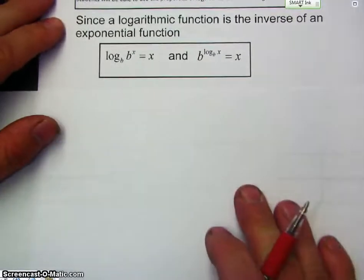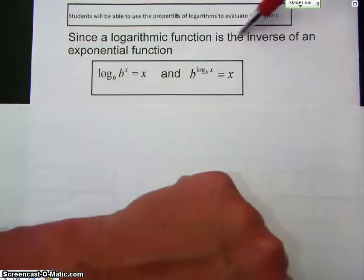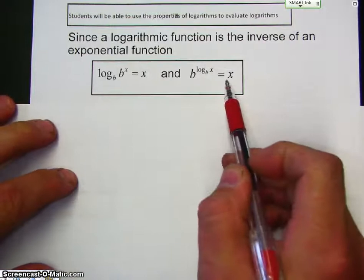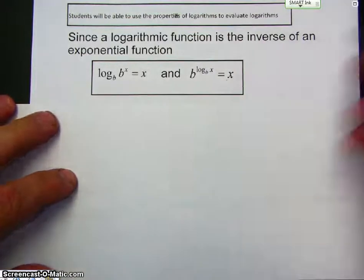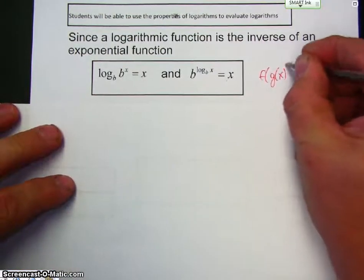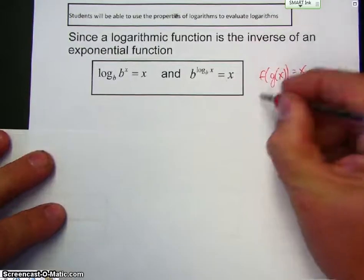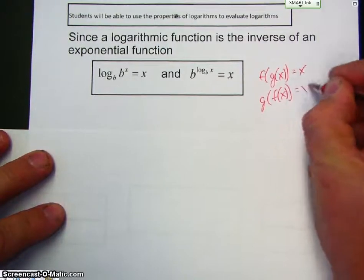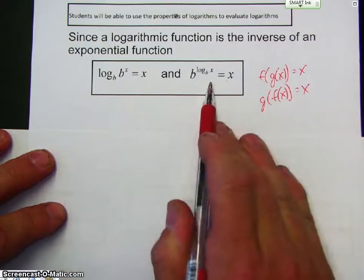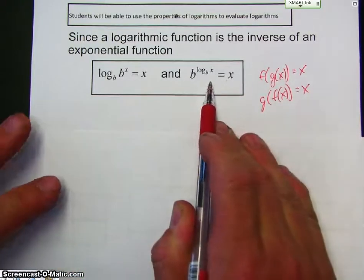First of all, since a logarithmic function is the inverse of an exponential function, let me just state this. Remember, in previous functions, if f of g of x is equal to x, and we reverse it, then they're inverses of each other. This is its version for exponential and logarithmic functions.